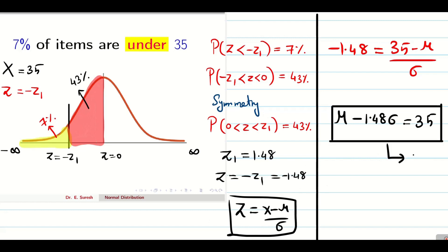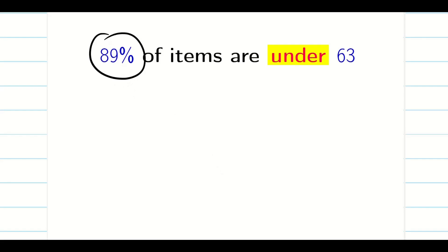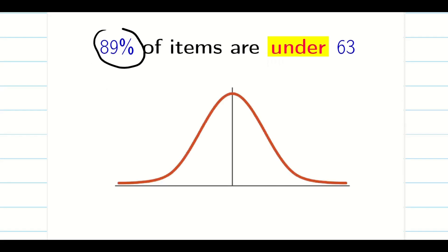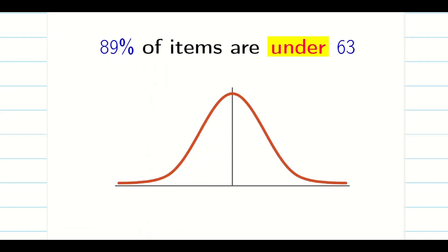Now for the second information: 89% items under 63. Many students make a common mistake here — they assume 'under' always means the left side. But we need to think carefully: 89% is much larger than 50%. Since each half is 50%, an 89% region must extend to the right hand side. So this point lies in the positive region and z2 is positive.